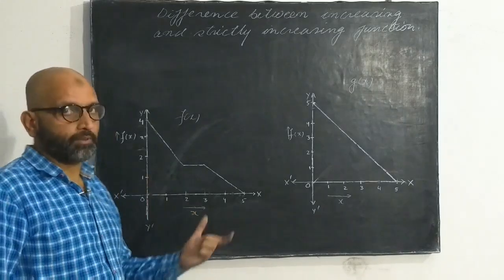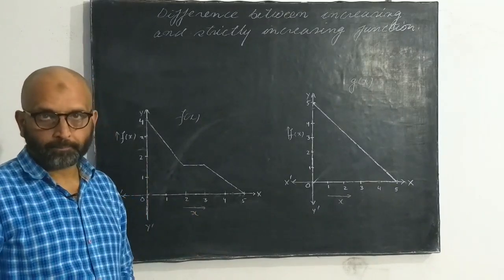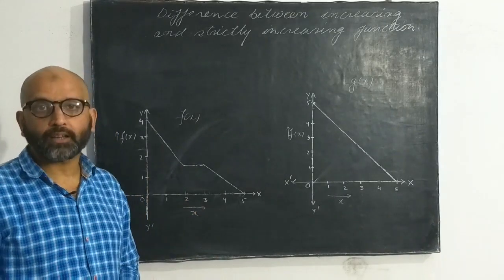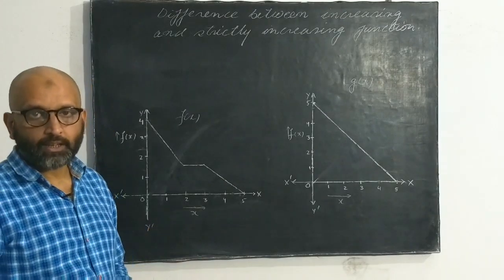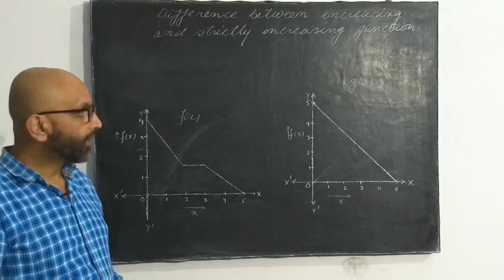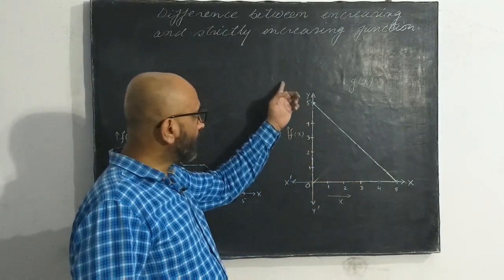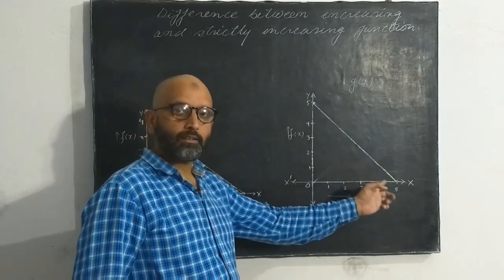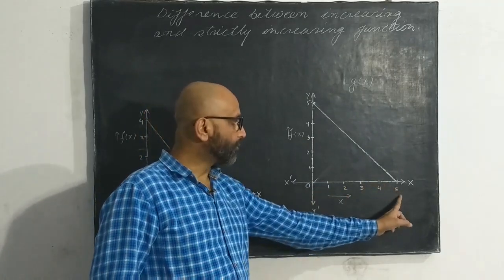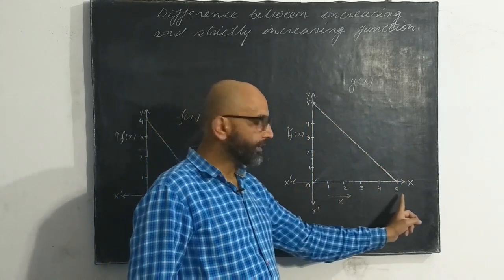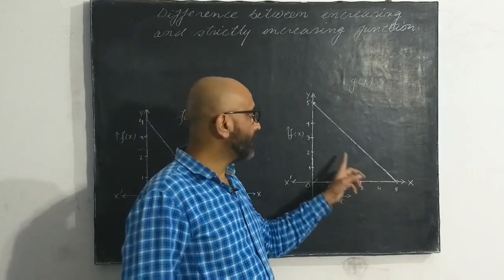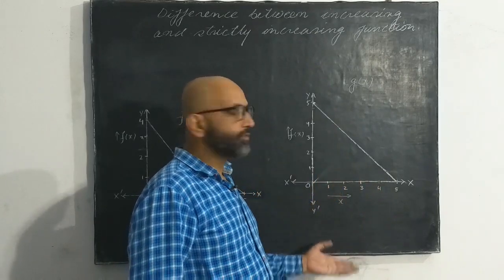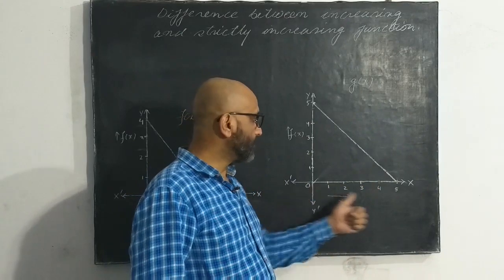If at any point in the entire interval the function becomes constant — if it has not continuously decreased throughout — then we can call it a decreasing function but not a strictly decreasing function. However, in the second case, if the graph continuously decreases throughout its domain from 0 to 5 and at no point is it increasing or constant, then we say that this function is strictly decreasing on the interval 0 to 5.